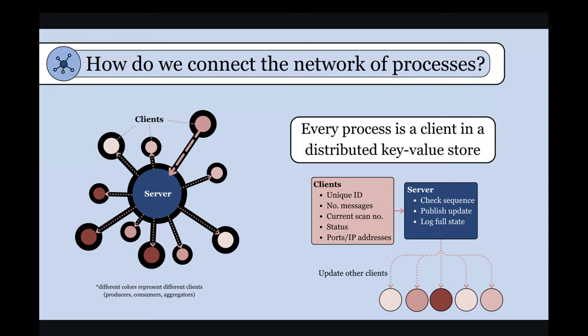And so what you have with these consumers now joining into this network is the ability for the producers, the things that are receiving the data from the microscope, to know whether or not they should start sending data downstream to NERSC or whether they should just write to disk. So as soon as you pull up these consumer processes at NERSC, the producers know that they're available to send and then can push data downstream.